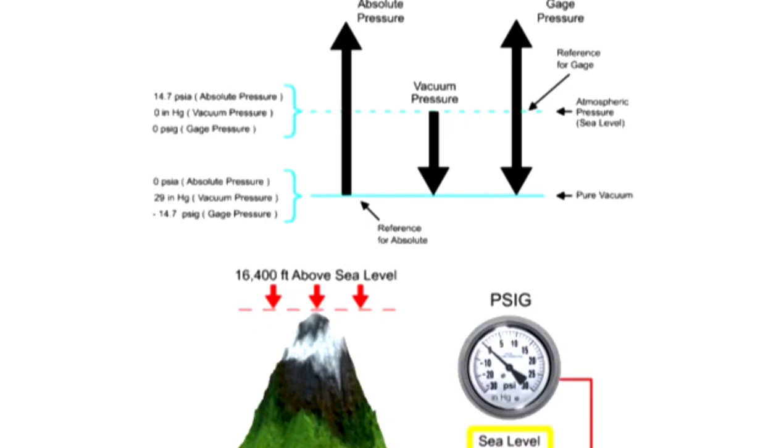At sea level, the gauge measurement is zero. Measurement of gauge pressure can be positive or negative and is determined if it's above or below atmospheric pressure.